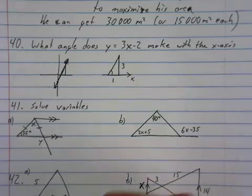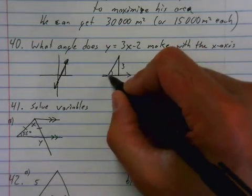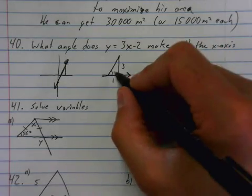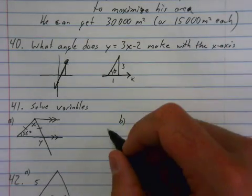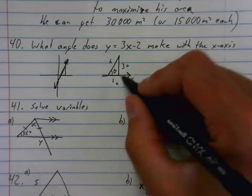Because the slope is 3 over 1, so it's rising 3 as it's running 1, and this is the x-axis, which is the horizontal line on the bottom of that triangle. So if you want to solve that theta, you could label this with O, H, and A, and use your trigonometry.